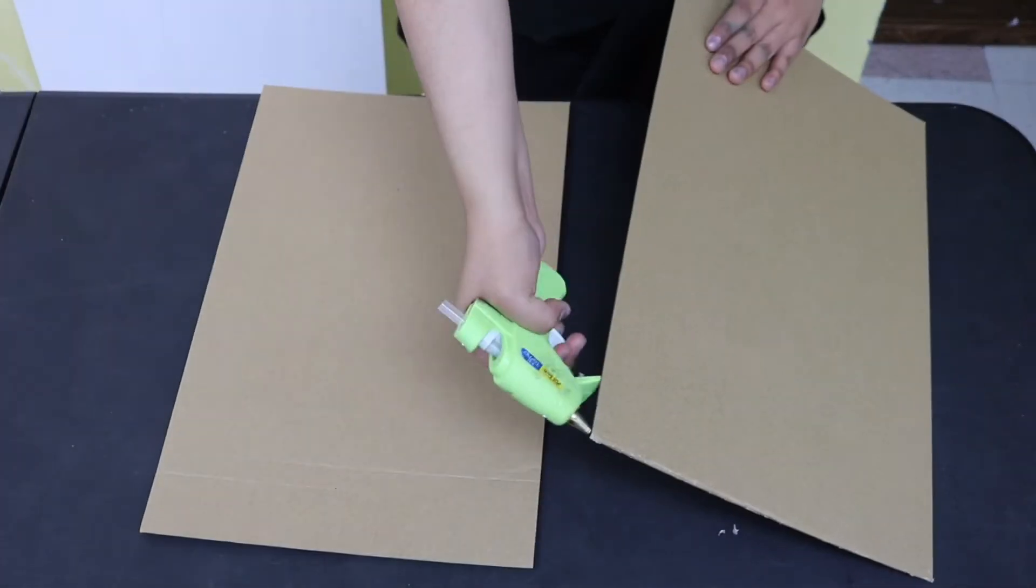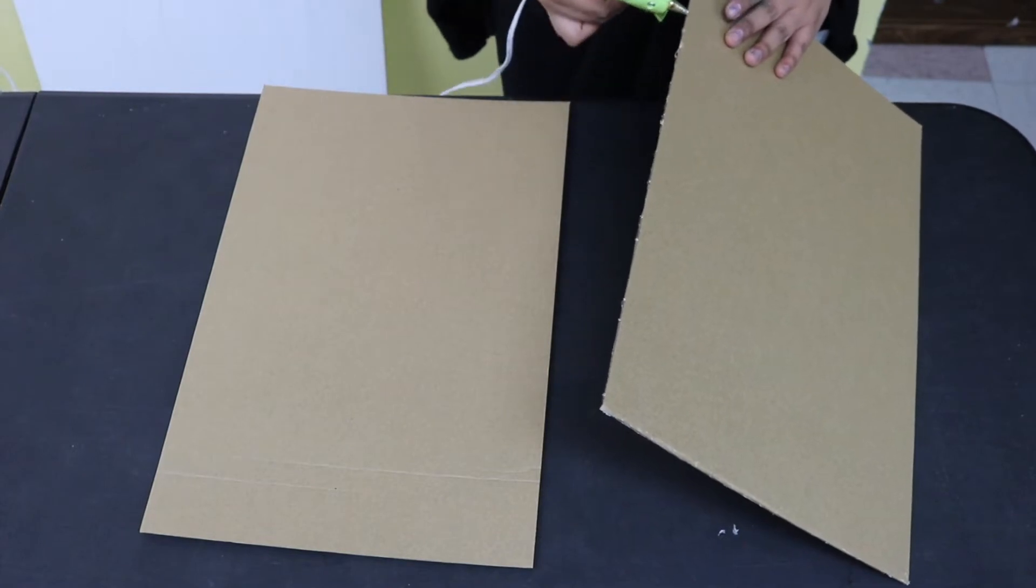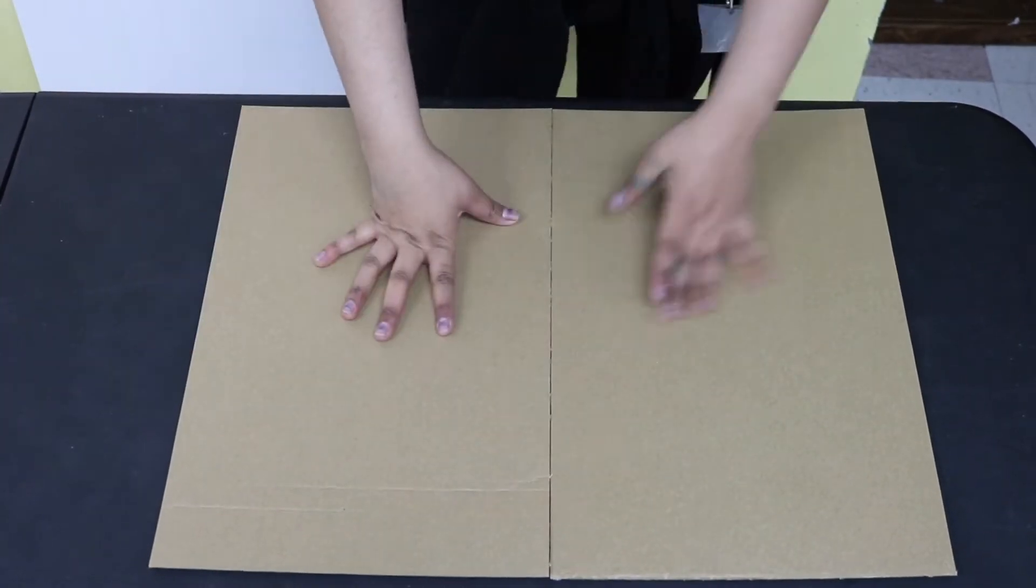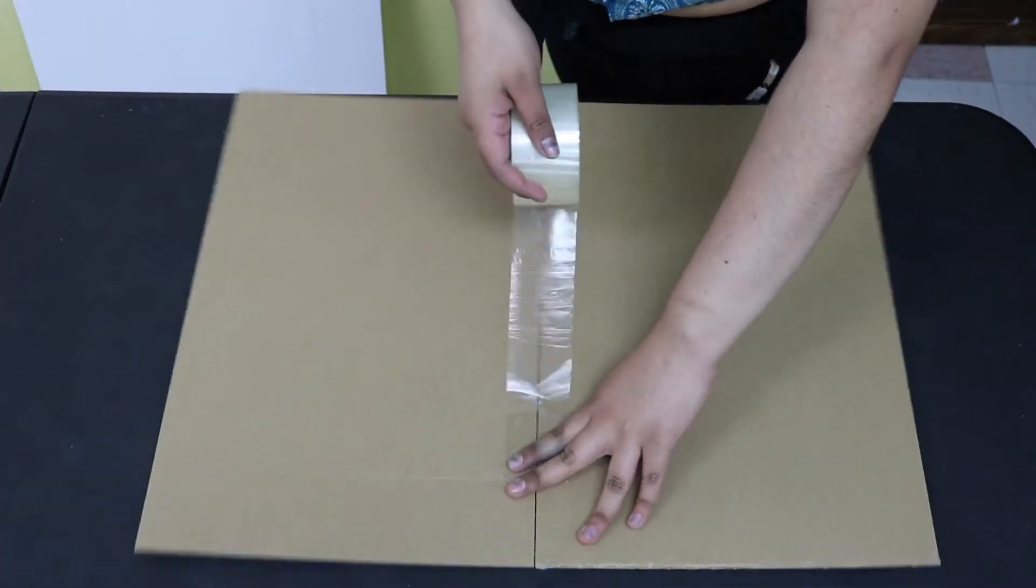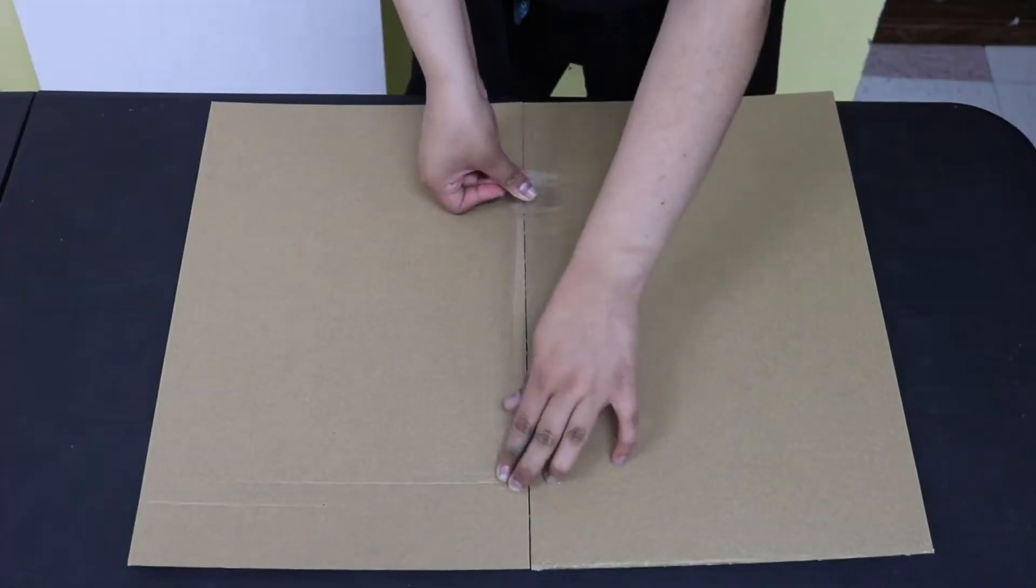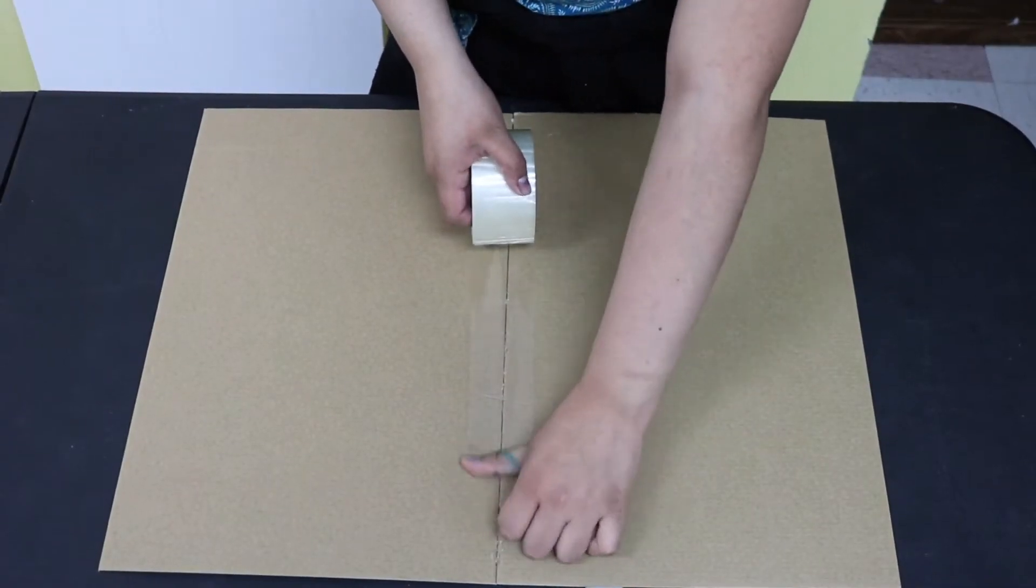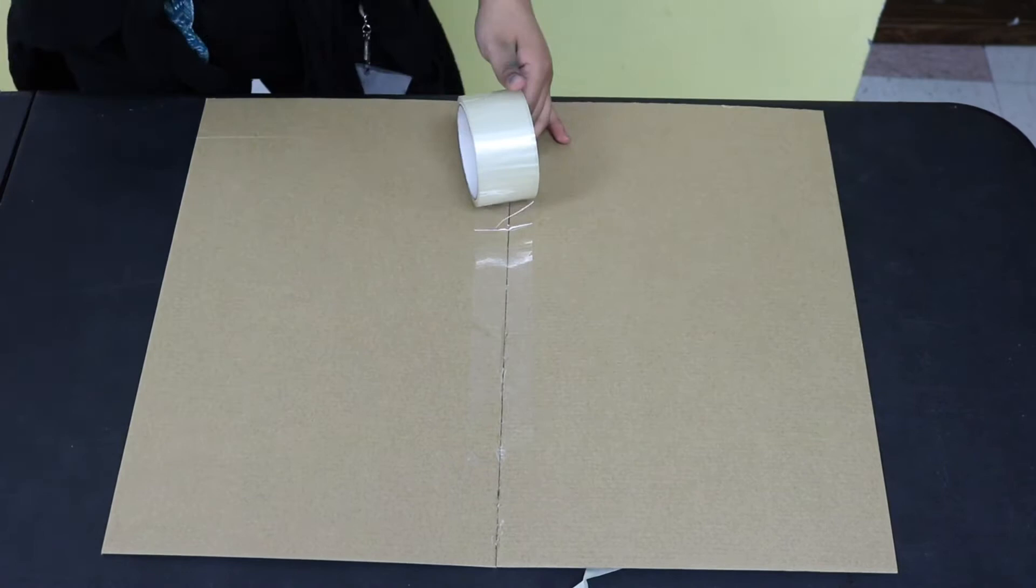Begin by taking the two pieces of cardboard. Add a strip of glue to the side and stick it with the other one to make a bigger piece. For extra reinforcement, add a strip of tape to the center to make sure both pieces stay together without moving. Flip your cardboard over and do the same thing on the other side.